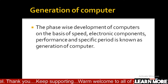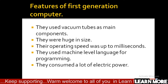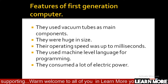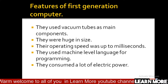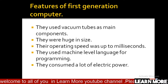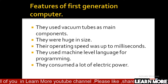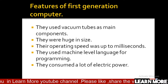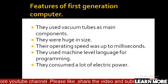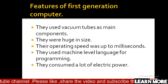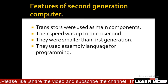Let's move to the features of first generation computer. They use vacuum tube as the main component. They were huge in size — the computers of first generation were very big. Their operating speed was up to millisecond, meaning it was quite slow. They used machine level language for programming and consumed a lot of electric power.